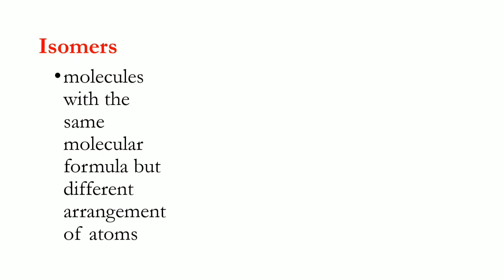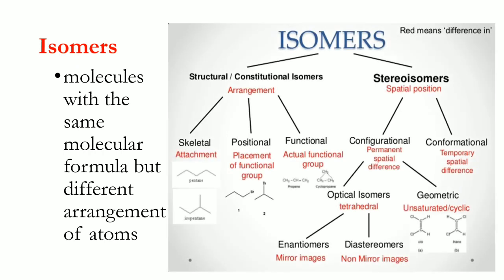Now let's go over isomers. Isomers have the same molecular formula but different arrangements of atoms. Isomers can be categorized as structural or constitutional, or as stereoisomers. Structurally we have skeletal, positional, and functional isomers. Spatially, we have configurational and conformational isomers, with configurational isomers subdivided into optical and geometric, and optical isomers into enantiomers and diastereomers.